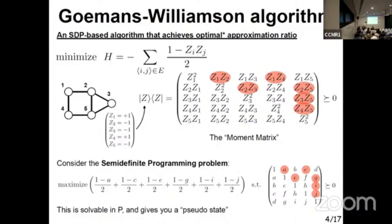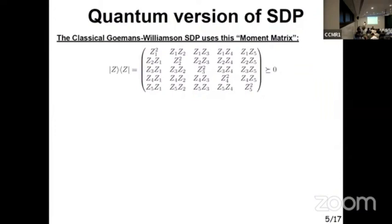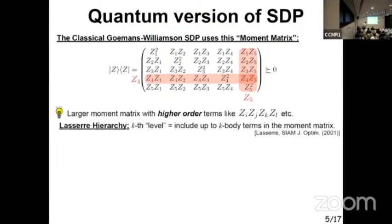What is the semidefinite programming really doing in the classical case? If you have five bits and a graph like this, the Hamiltonian looks like this. You're encoding the true solution as a five-dimensional vector with plus and minus ones. This is not a Hilbert space element. If you take the outer product of this, you get the moment matrix. This moment matrix encodes all the correlations or moments up to degree two. Because of this construction, you can guarantee this has to be positive semidefinite, meaning you never have a negative eigenvalue.